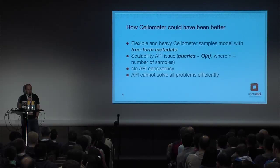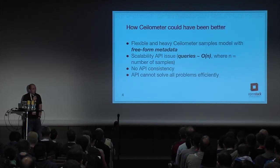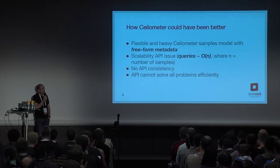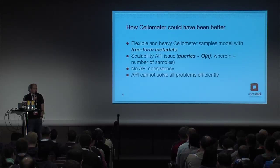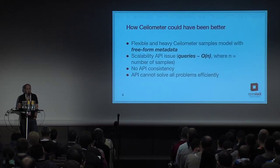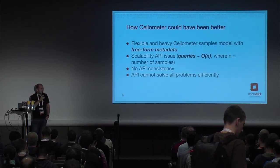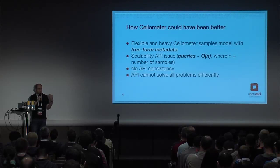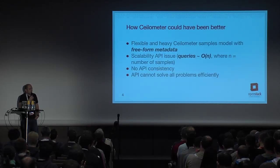The data structure we named 'sample' in Ceilometer is free-form — it can have anything in it. When we started Ceilometer, we relied on notifications, and the notification subsystem in OpenStack is free-form too. So we ended up with an API which has no consistency, meaning most of the data returned is free-form. It's very hard to know in advance which fields you're going to have. Some fields are part of the API contract, but sometimes you just don't know. So it's hard to build queries, retrieve data, manage it, and build applications around it.